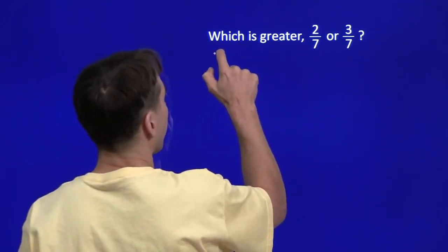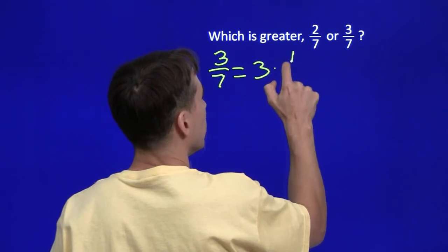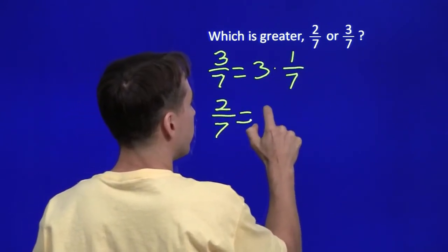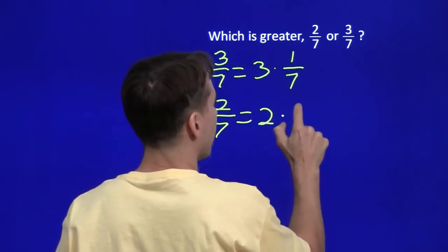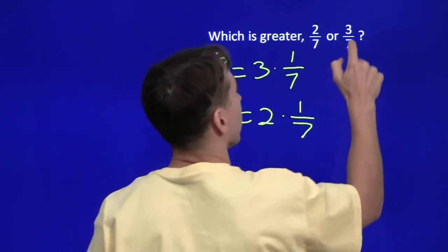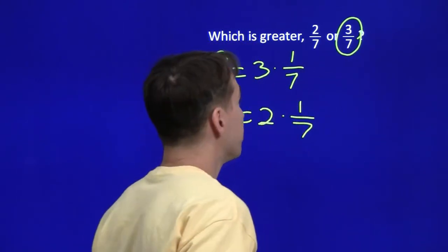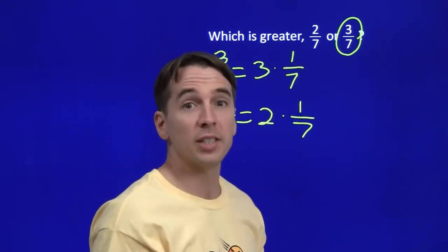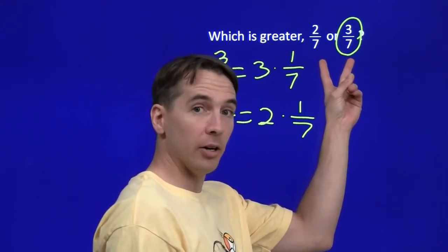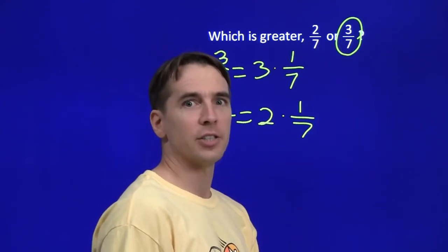We can also think about fraction multiplication. Three-sevenths is three times one-seventh, and two-sevenths is two times one-seventh. Two of something is going to be less than three of something. So three-sevenths is greater than two-sevenths. Any time we compare two fractions with the same denominator, the fraction with the larger numerator is the larger fraction.